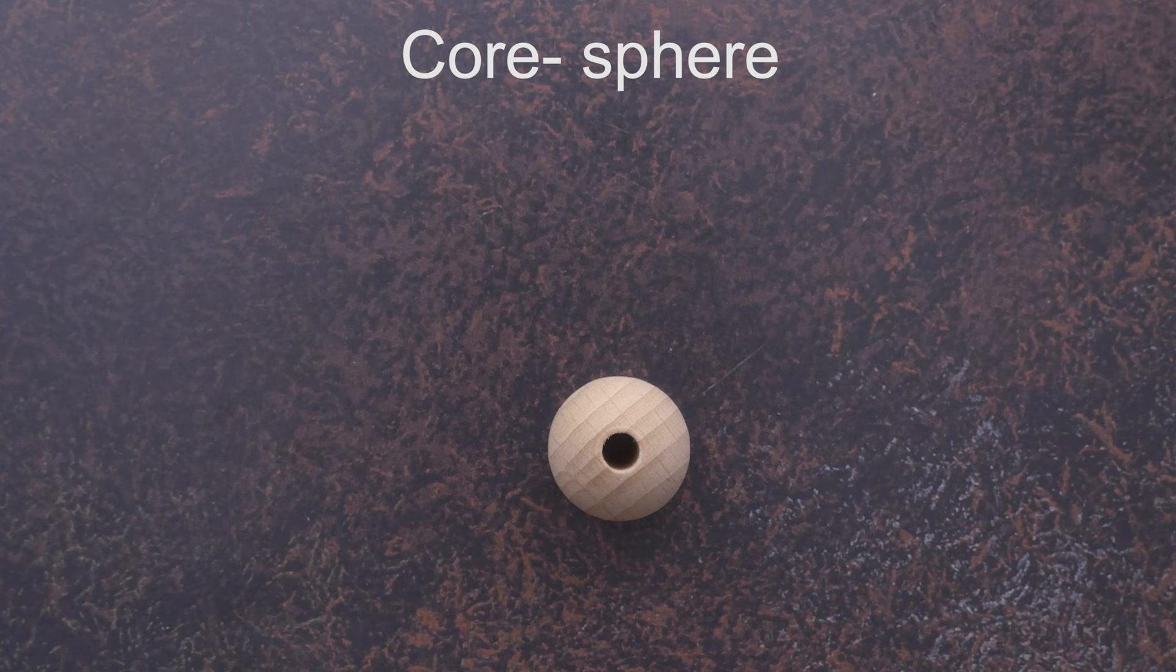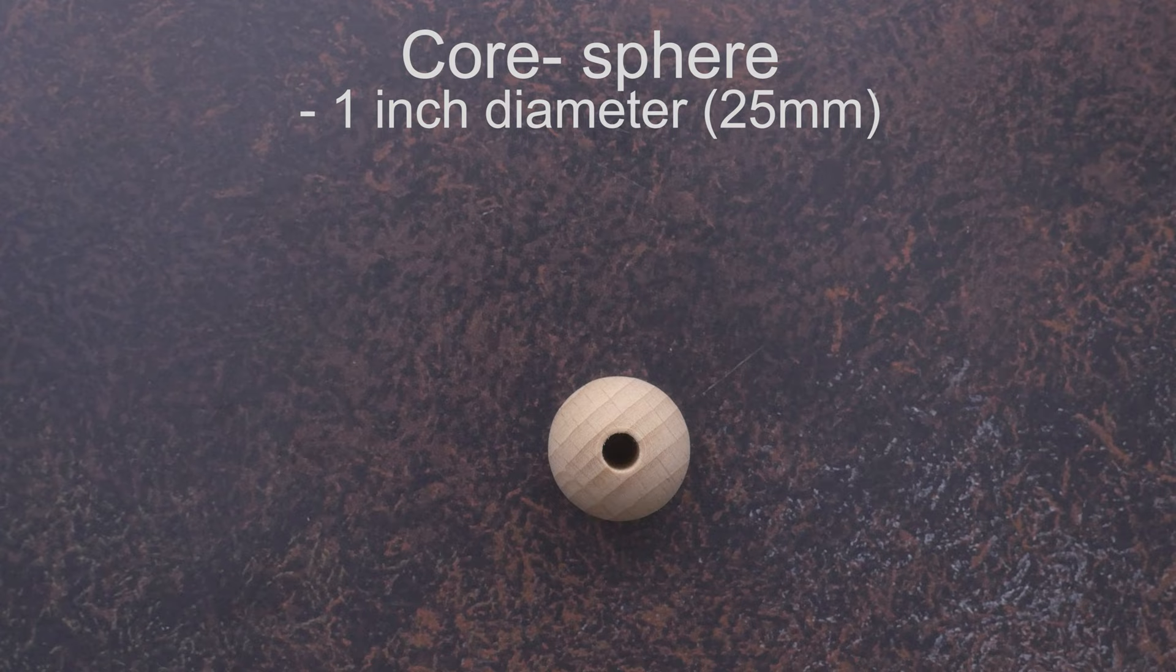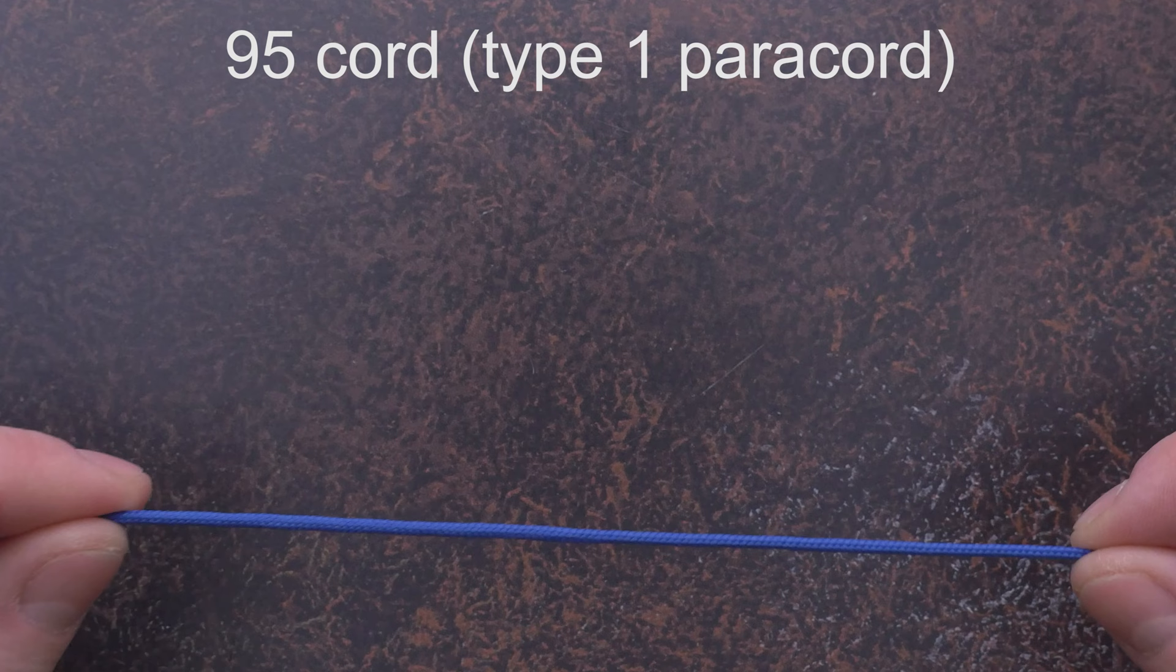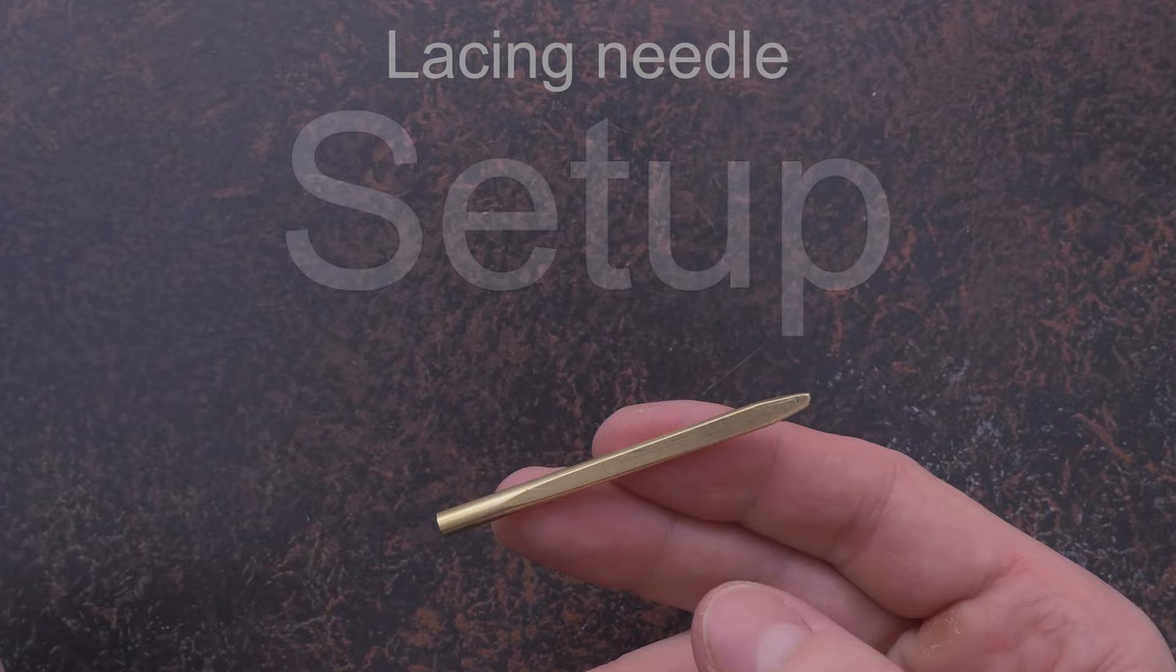Next, we're going to need a cord for our knot, which is again an inch in diameter. We're going to need a piece of 95 cord, this one is 13 feet long. Finally, a lacing needle is almost a must.